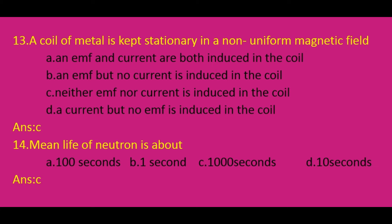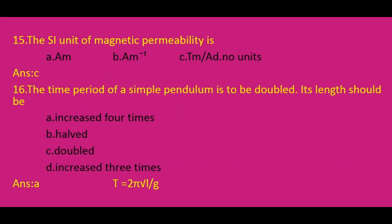The mean life of a neutron is about 1000 seconds. The answer is C. The SI unit of magnetic permeability: the answer is C, Tesla-meter per ampere (Tm/A).